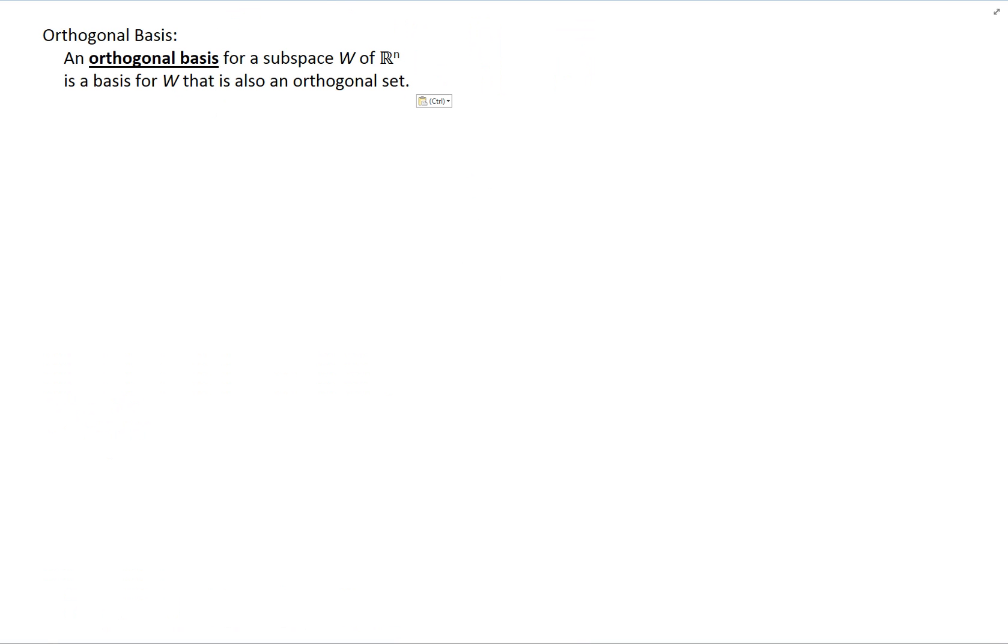As an example, suppose that we have in R2, we have a vector V1 and a vector V2. Now these two vectors are linearly independent since they're not collinear. And therefore, the set V1 and V2 is a basis for R2.